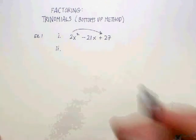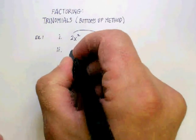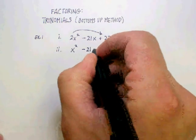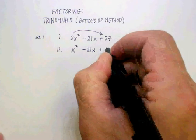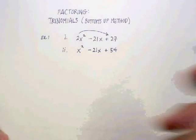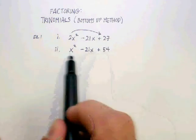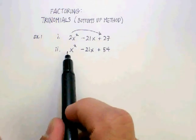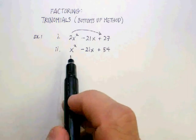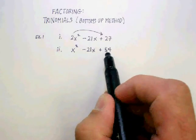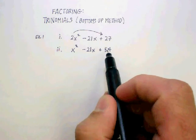In this case, we're going to get x² - 21x + 54. What you've done is you've turned your trinomial into a trinomial where the leading coefficient is now 1. What does that do for you? Well, now you want to find two factors of 54 that add up to negative 21.